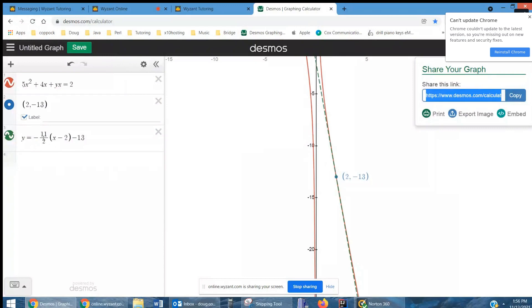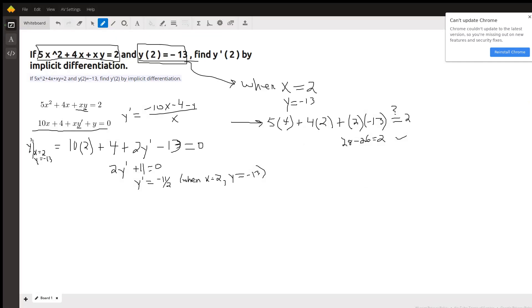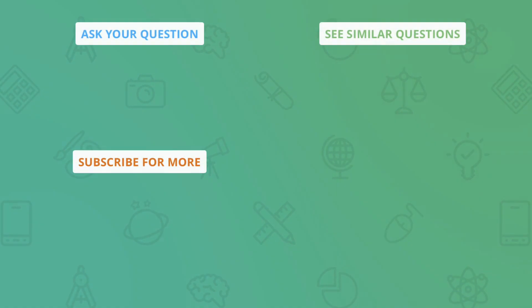Slope is negative 11 halves. We're passing through the point 2 negative 13, so we would have had a y plus 13 on the left, but I moved it over here. I could put that into slope intercept form, but there you go, that's the idea. If you have any questions, post a comment.